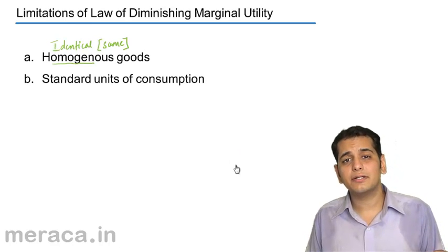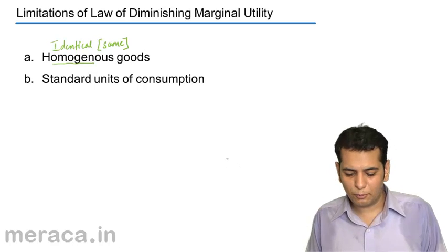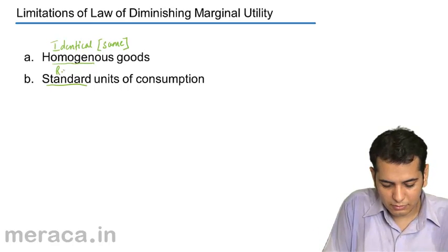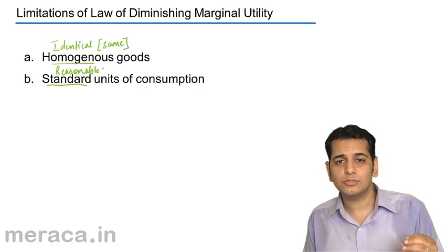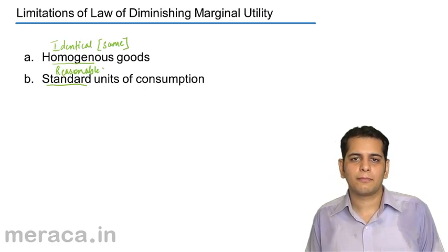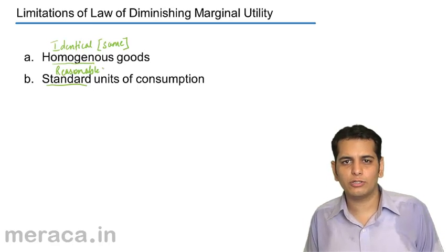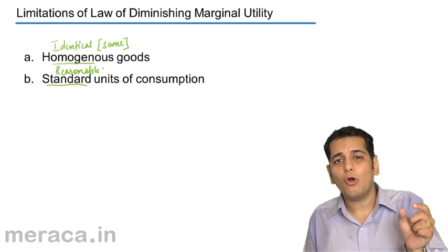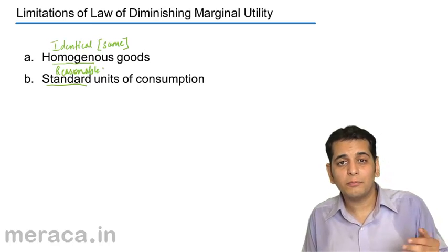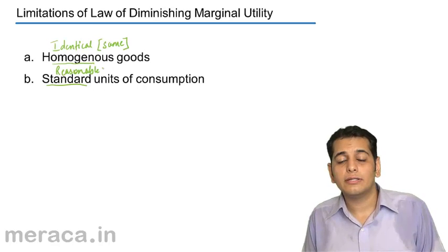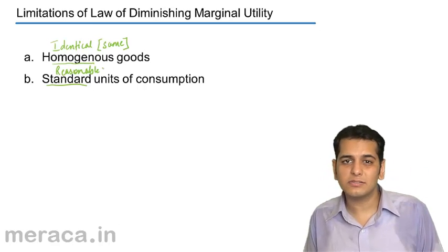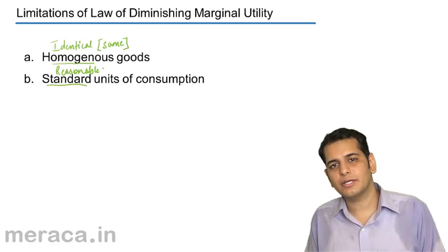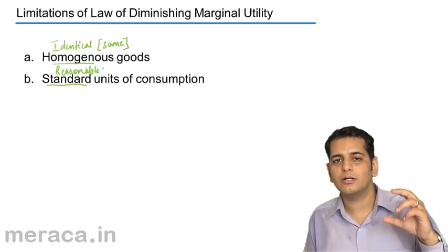Second: standard units of consumption. Standard means reasonable — the units of consumption should be reasonable. Let's consider a person who is very thirsty. If you feed him only a spoon of water, that will not be a reasonable unit of consumption. Probably when he gets the second spoon of water, he might get a higher amount of satisfaction. So when considering the law of diminishing marginal utility, we have to consider at least reasonable or standard units of consumption. In this case, the standard unit would be a glass of water.